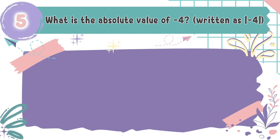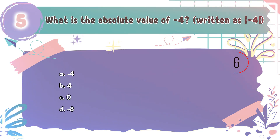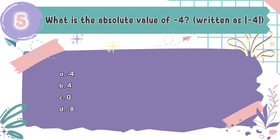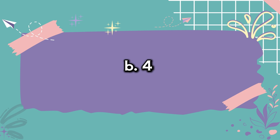Question number 5: What is the absolute value of negative 4? The choices are A. Negative 4, B. 4, C. Zero, D. Negative 8. The correct answer is B. 4. The absolute value is always positive because it's a distance — negative 4 is 4 steps away from 0.